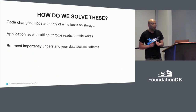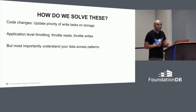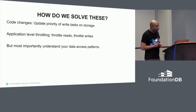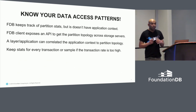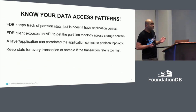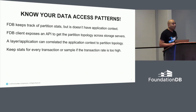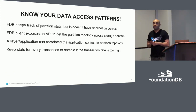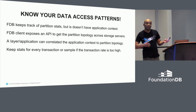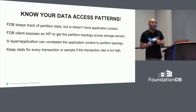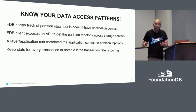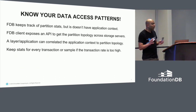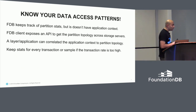As a database company, we should be really good at understanding data patterns, but it turns out we weren't as good as we should be, and we've been knocked on the head by various people about that. FoundationDB keeps track of partition stats but doesn't have any application context. The application layers themselves have both application context and an API they can use to get partition stats from FoundationDB — we may have made some changes to give you both storage and port information, and it's a trivial change that can be ported to open source quite quickly.